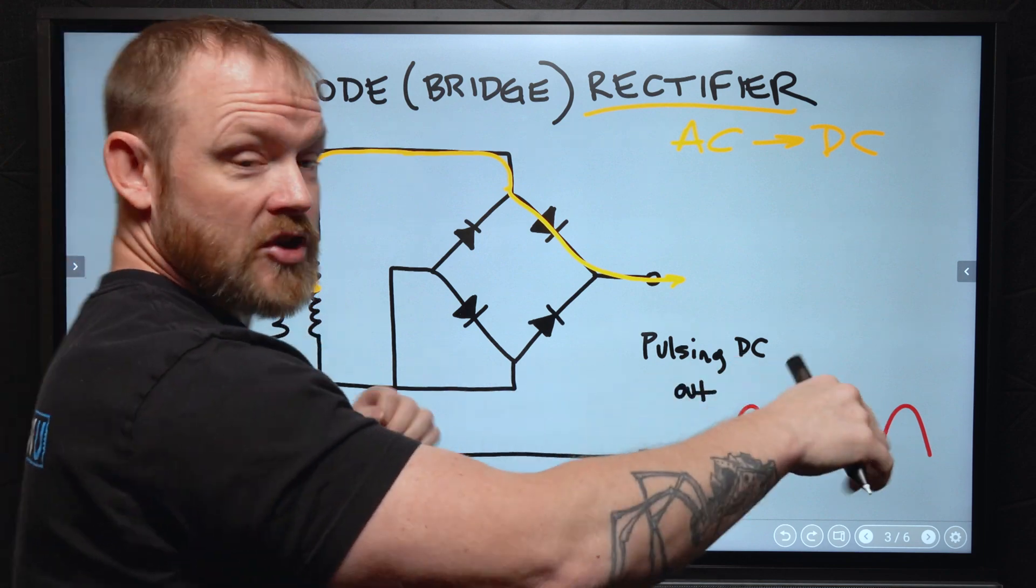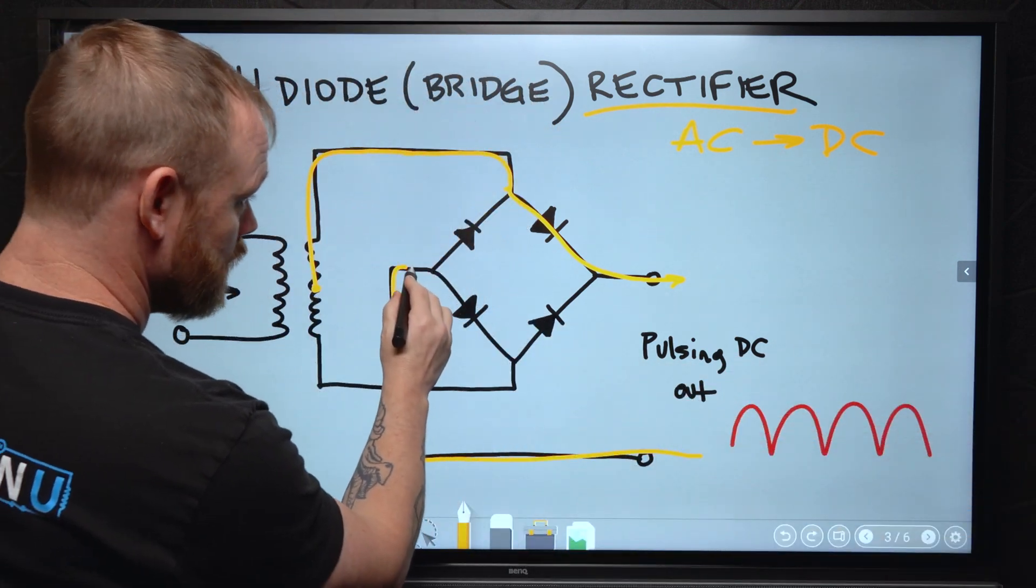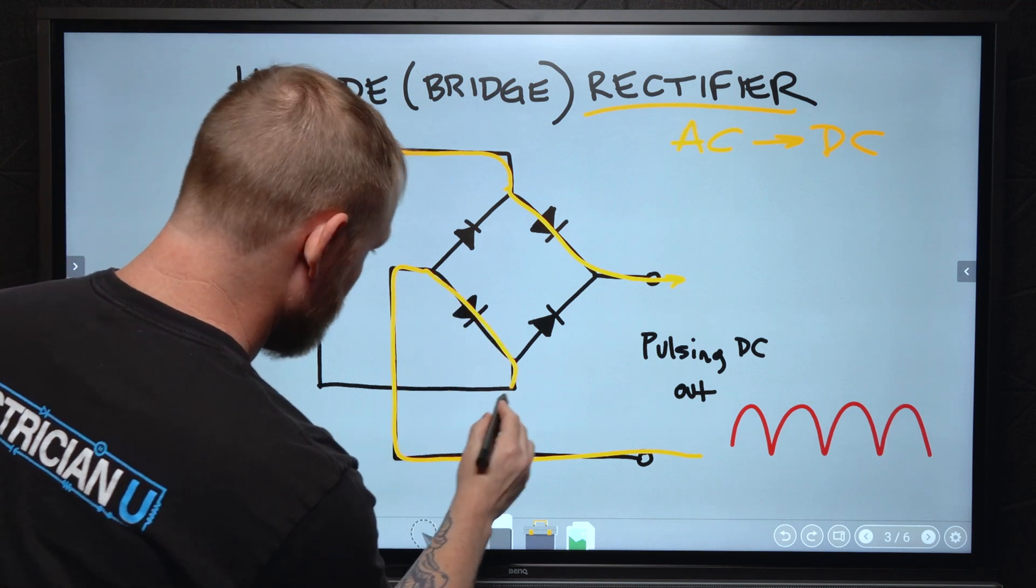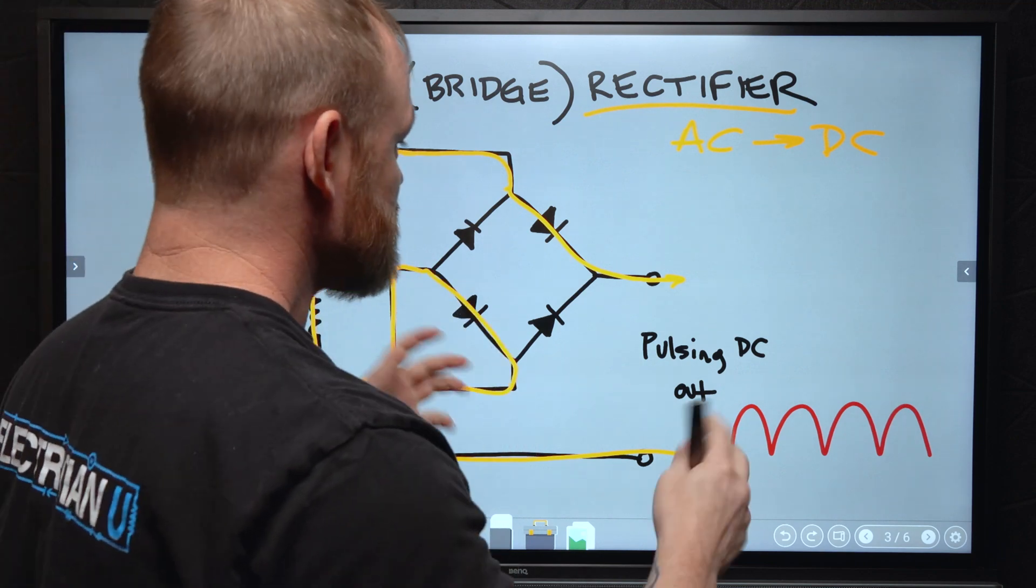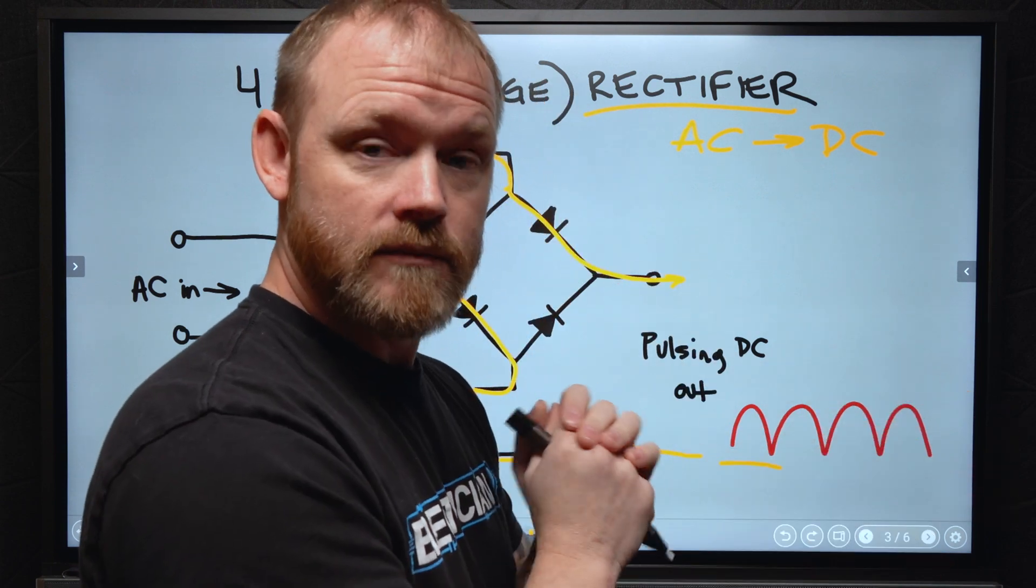Since we have pushing and pulling that's happening at the same time, we have pulling that's coming through and we have to follow the arrows again. We have a complete circuit. So that allows one pulse out of the output of this to happen.